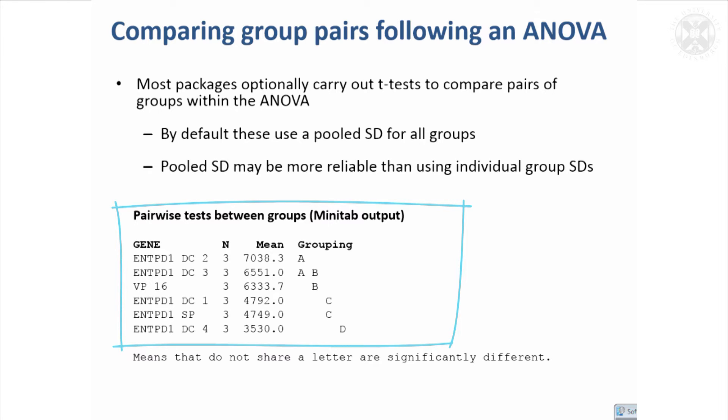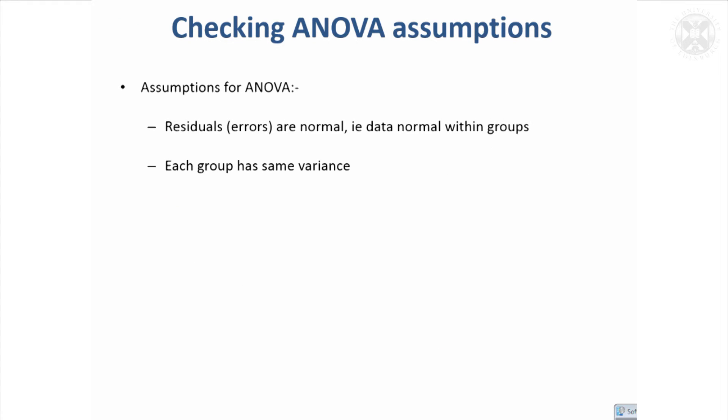It's important to be sure that your ANOVA assumptions are met. What you're assuming when you're doing an analysis of variance is that the residuals or the errors are normally distributed, and that effectively means, just as with the t-test, that the data are normally distributed within their groups. You also assume, because we're taking the same standard deviation for each group, that the groups have the same variability.